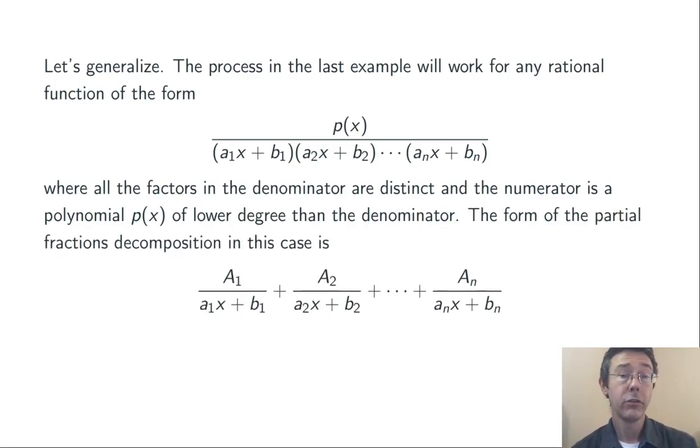The form of the decomposition that you're going to be looking for is like this: A₁ over the first linear term plus A₂ over the second linear term, and so on. Here the capital A₁ is different from the small a₁, different coefficients. This notation, by the way, is pretty much traditional. It doesn't really necessarily matter what names you give those coefficients.